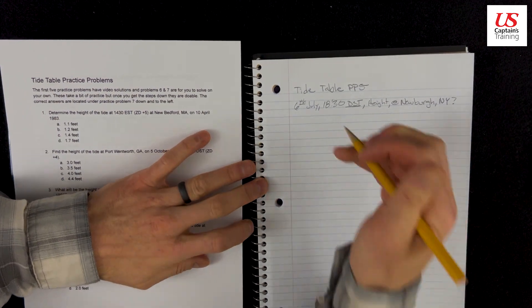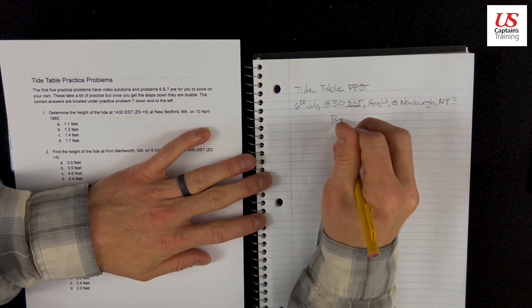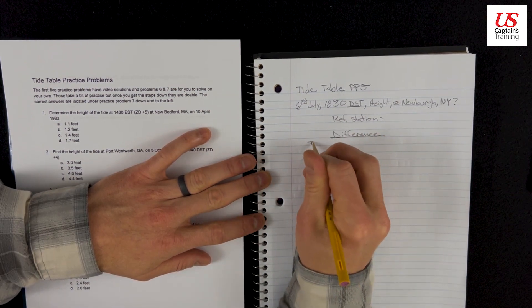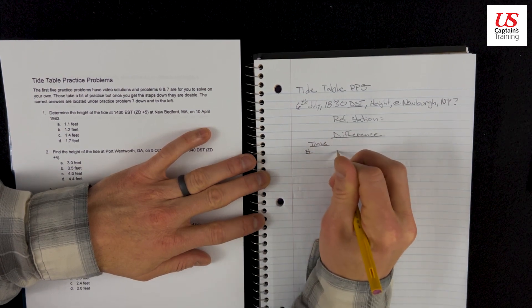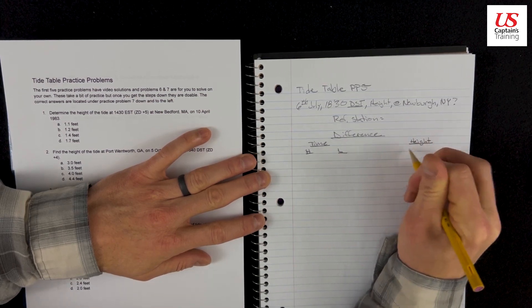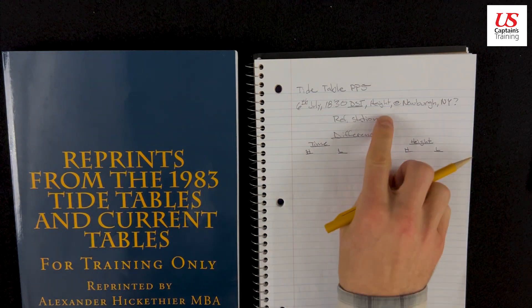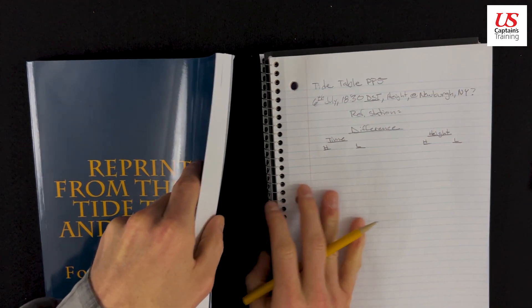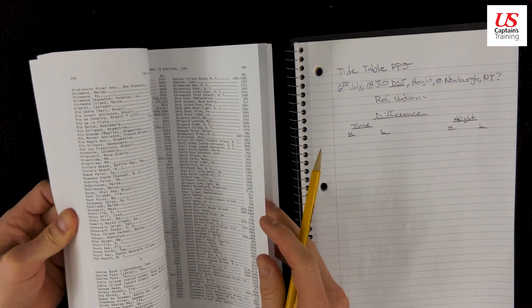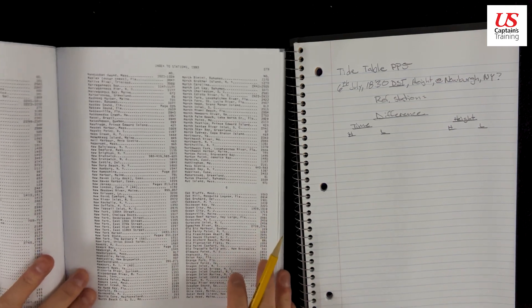We'll get this problem all set up because we know that we're going to go into the index, find this, and right away we're going to get a reference station. And then we're going to get differences. And what differences are we going to get? We're going to get time differences of the high and the low. Okay, we're all set up. We have information from the problem.